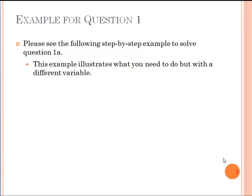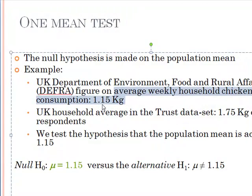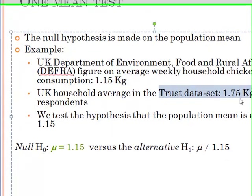The goal is to determine one mean test. Using some data from England, the average weekly household chicken consumption in England is about 1.15 kilograms. We have a data set called the trust data set and using that data set we found that the average consumption of chicken is actually in our sample 1.75 kilograms. So we need to test our hypothesis.